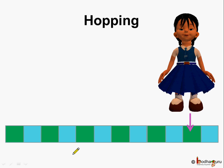And what about Khushi? Khushi hopped till here. Let's count it. 1, 2, 3, 4, 5, 6, 7, 8, 9, 10, 11. Khushi hopped till 11 squares.